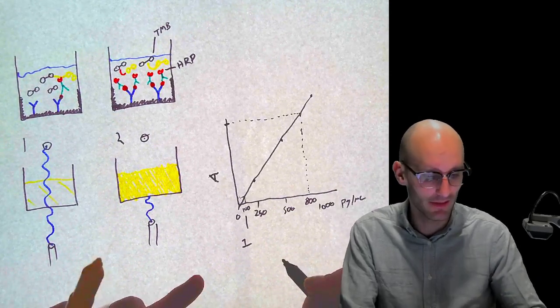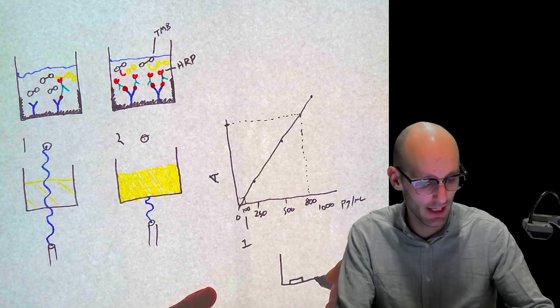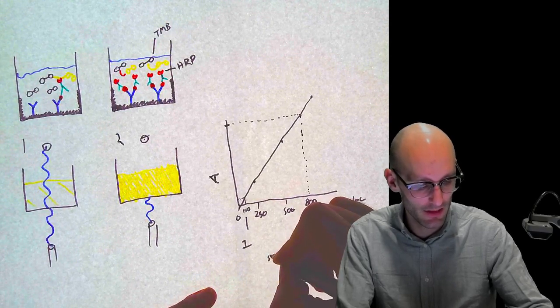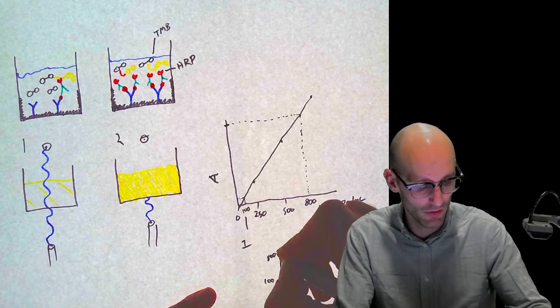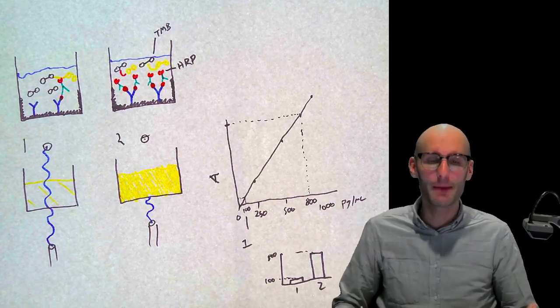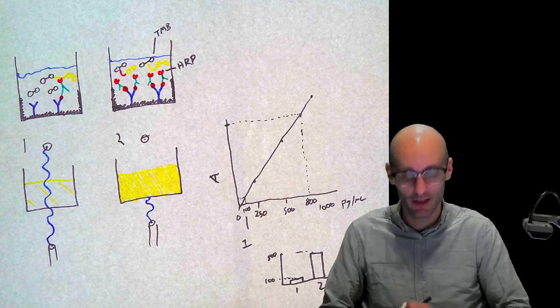So, now that we can see, now we can maybe draw this on a bar graph, we get patient one down here, patient two up here, this is 800. So, we can see patient two has way more IL-1 in their plasma than patient one. So, this is roughly how an ELISA works.